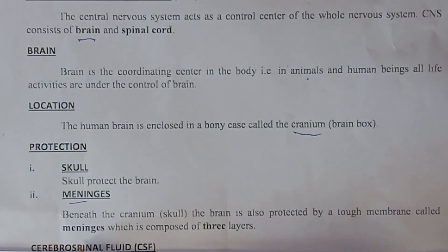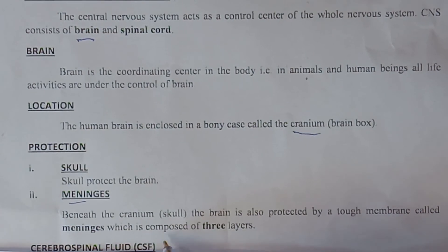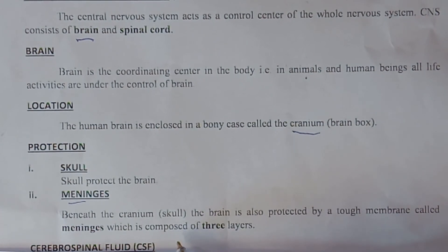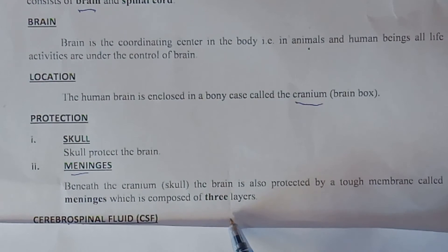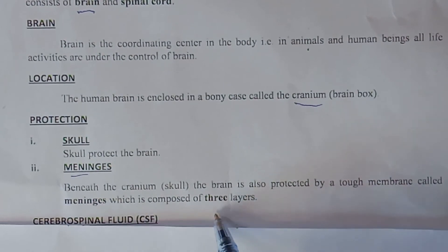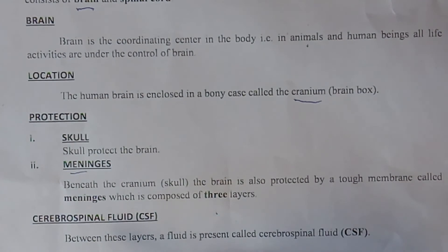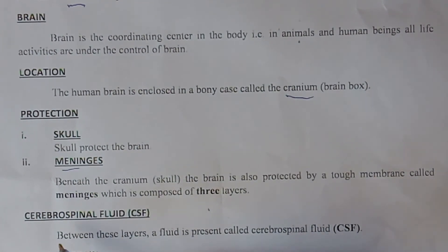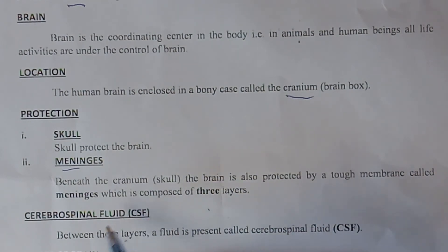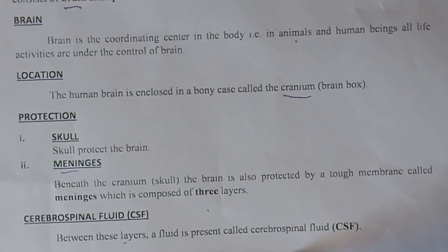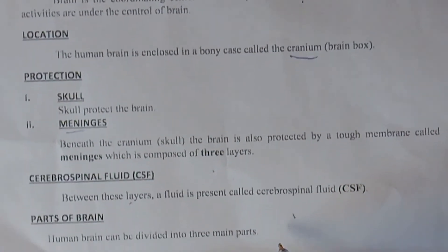The brain is also protected by a tough membrane called the meninges. The meninges are layers responsible for the protection of the brain and consist of three layers. Between the layers of the meninges, a fluid called cerebrospinal fluid is present.